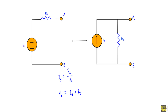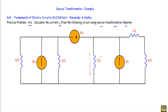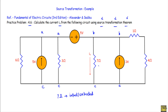We have to calculate the current through this 7 ohm resistor. The rule of source transformation theorem is that the branch through which we have to calculate the current or voltage, we will keep that branch intact or untouched — we will not apply any theorem to it. Since we have to calculate the current through this 7 ohm resistor, we will not touch that branch; rather we will start simplifying the circuit from both sides of the network.